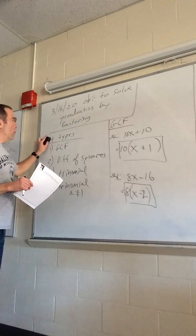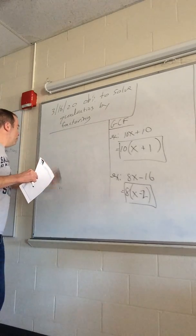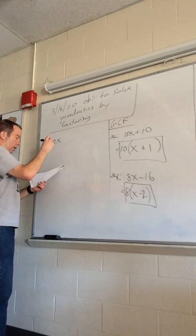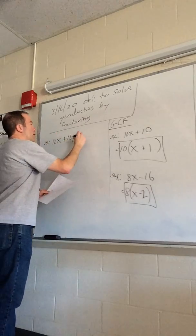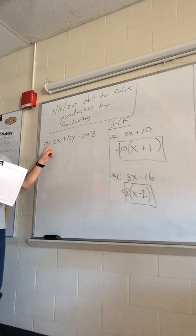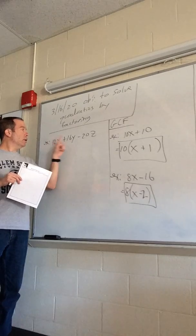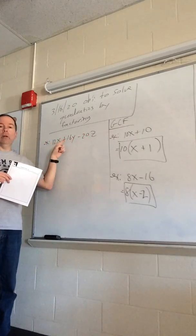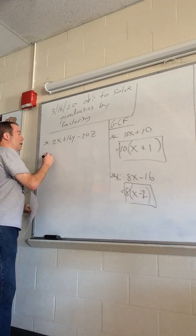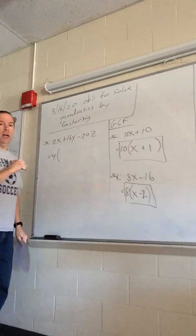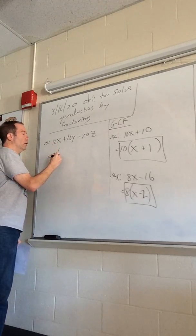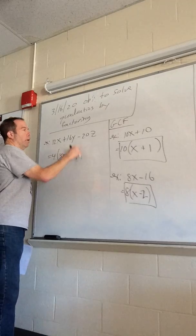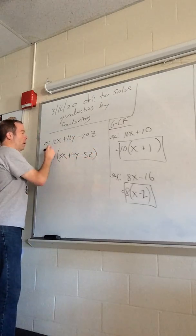Now a three-term example with variables: 12x + 16y − 20z. We look at the variables first — we have x, y, and z, and none are in common. So we look at the numbers: 12, 16, and 20. The number that goes into all three is 4. Four times what makes 12x? That's 3x. Four times what makes 16y? That's 4y. And 4 times what makes negative 20z? That's negative 5z. And there are our factors.